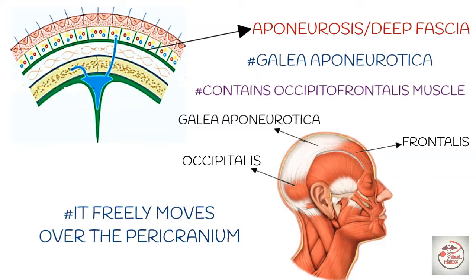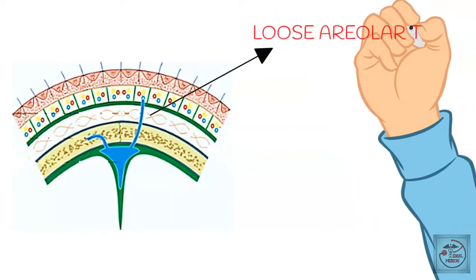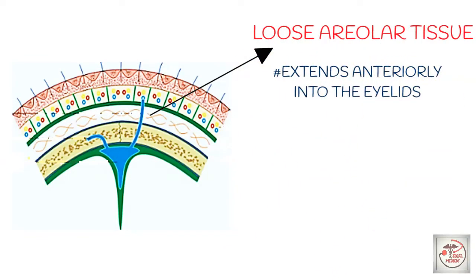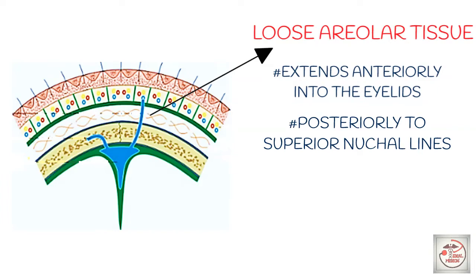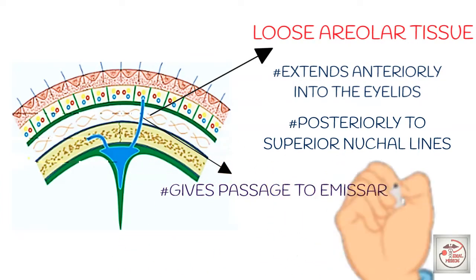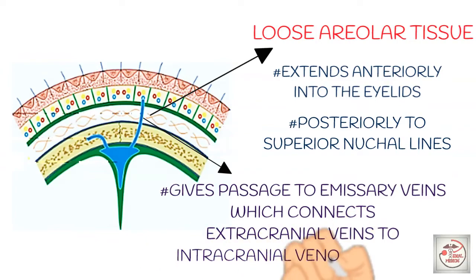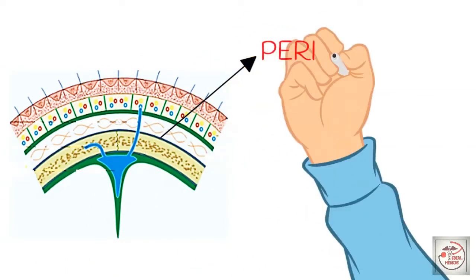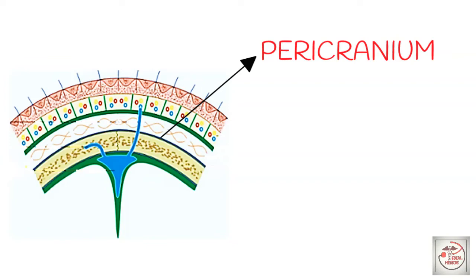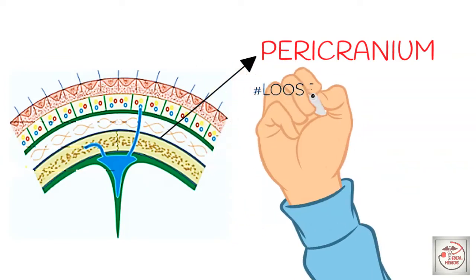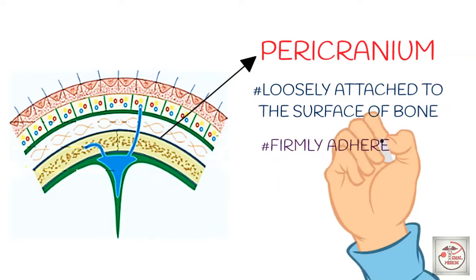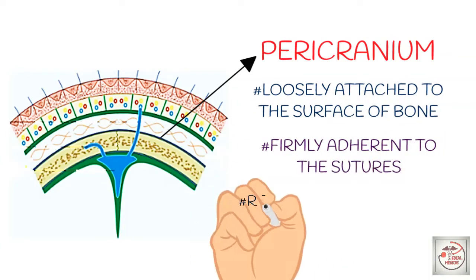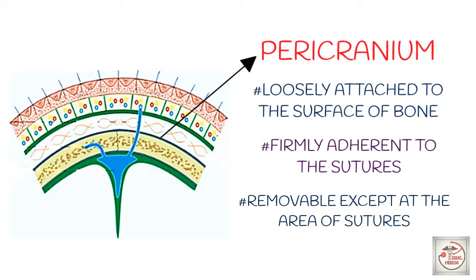The fourth layer is loose areolar tissue. Iska extension anteriorly till eyelids hota hai and posteriorly till superior nuchal lines. The important thing about this layer is it gives passage to emissary veins, which connect extracranial veins to intracranial venous sinuses. The last layer, pericranium, lies between the skull bone and loose areolar tissue. Yeh bone ki surface se loosely attached hoti hai, but sutures se firmly attached hoti hai — that's why it is removable except at the area of sutures.